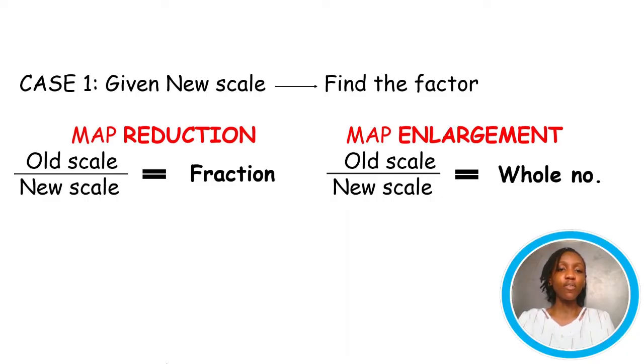The first one, you are either given a new scale and asked to find the factor by which it is to be reduced or enlarged. And with that, I have a formula to make things easy for you. You can find this formula in your textbooks. And the formula goes as thus, old scale over new scale. But now the way to differentiate it from map reduction and enlargement is the answer you get.